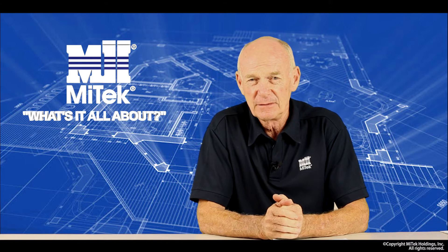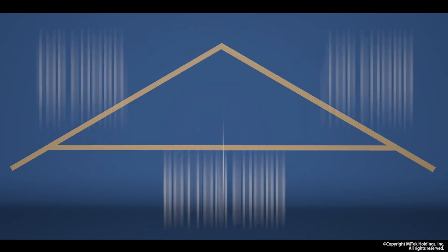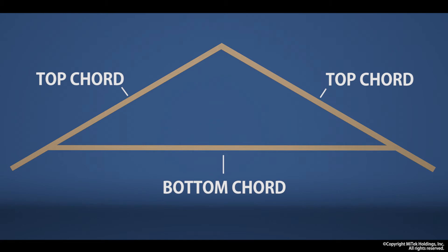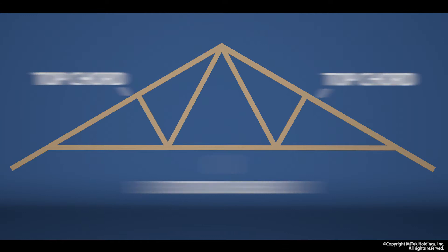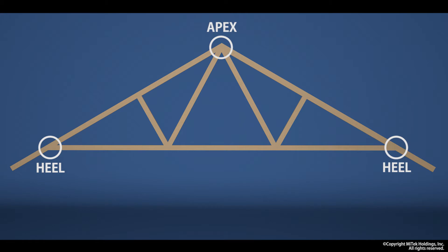The actual truss terminology is quite simple. Each structure has what is called a top chord and a bottom chord, which forms the external perimeter of the truss. The internal components are called truss webs. Reference is often made to the heel and the apex of the truss. These locations are obvious, but what is really important is that they are the points of greatest connection load.